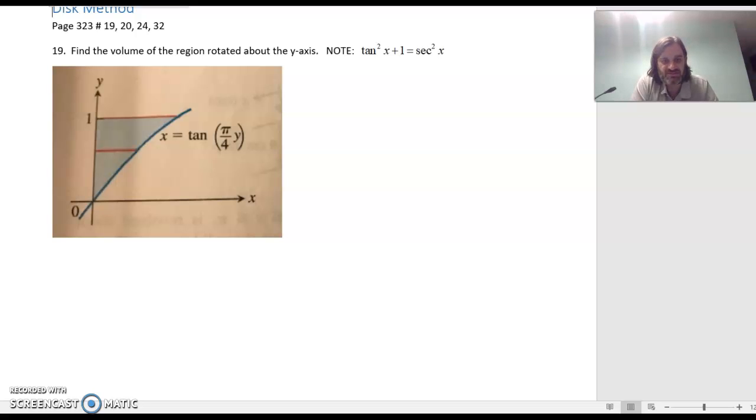We have a disk method practice problem here. Find the volume of the region when rotated around the y-axis. I have a little note beside there that we'll talk about in a moment. The region is going up to y equals 1 and is bounded between the y-axis, y equals 1, and the curve x equals tangent of pi over 4y.